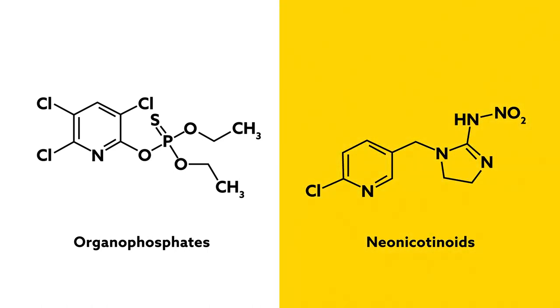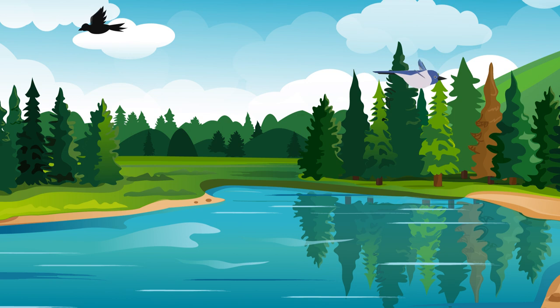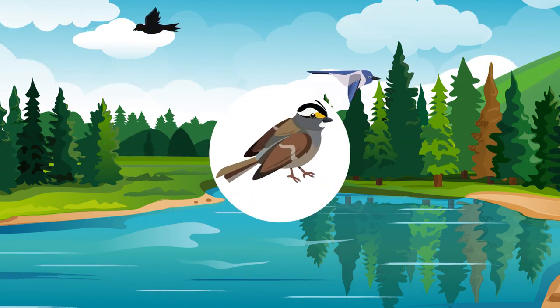Neonicotinoids, the more modern of the pair, were originally thought to be less harmful to the human and wildlife nervous system. But mounting evidence suggests that may not be the case. One group of animals susceptible to the brain-altering effects of the pesticides are migratory songbirds.